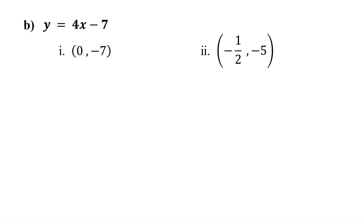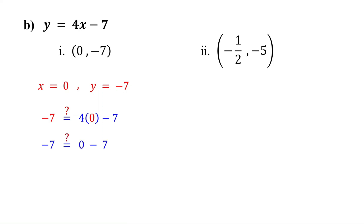For the ordered pair 0 comma negative 7, 0 is the x value and negative 7 is the y value. So substitute 0 for x and negative 7 for y. Then simplify. 4 times 0 is 0. 0 minus 7 is negative 7. Since both sides of the equation equal negative 7, the ordered pair 0 comma negative 7 is a solution to the equation.